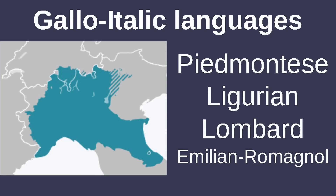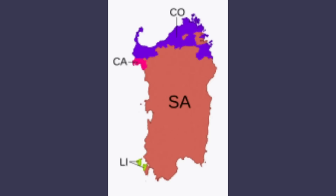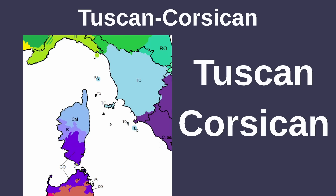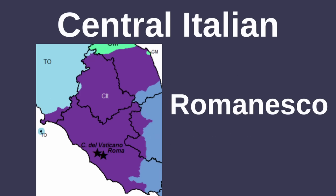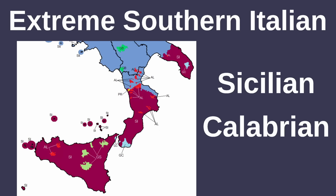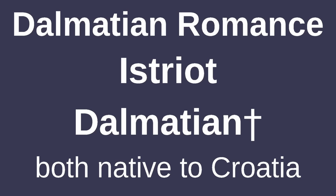The Gallo-Italic languages make up most of the regional languages spoken in northern Italy, which include Piedmontese, Ligurian, Lombard, and Emilian-Romagnol. In other branches, there are Arbitan, Ladin, and Friulian. Venetian is unclassified within Romance, and Sardinian forms its own branch. The remaining languages of Italy are all Italo-Romance, including Standard Italian. Its main divisions include the Tuscan-Corsican group, Central Italian, Southern Italian (which includes Neapolitan), and Extreme Southern Italian (which includes Sicilian and Calabrian). Italo-Romance forms the wider Italo-Dalmatian branch with Dalmatian Romance, which includes Istriot and the extinct Dalmatian language, both native to Croatia.